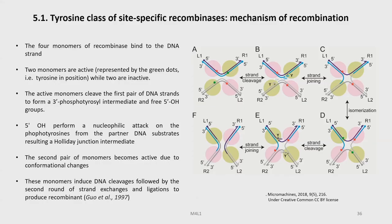Let us study in detail the tyrosine class of site-specific recombinase and its mechanism of recombination. Four monomers of recombinase bind to the DNA strand. Two monomers are active, represented by the green dots, and the other two lying diagonally are inactive. The active monomers cleave the first pair of DNA strands to form 3'-phosphotyrosyl intermediates and 5'-hydroxyl groups.